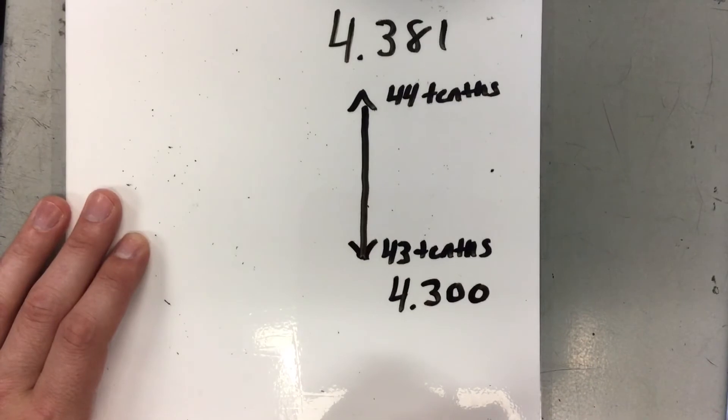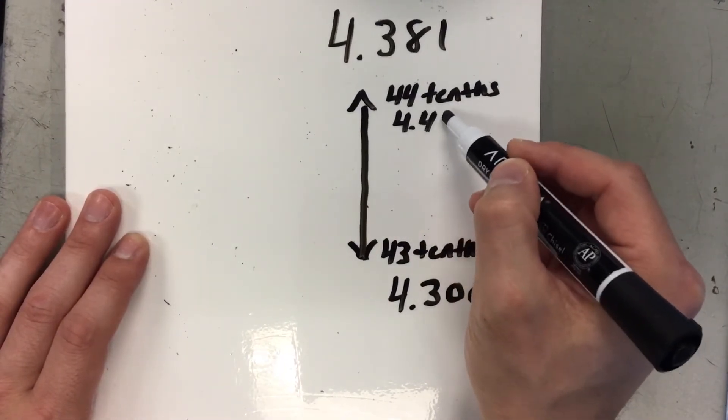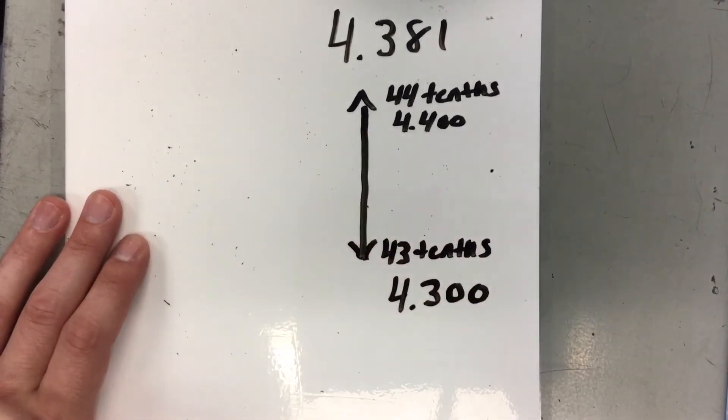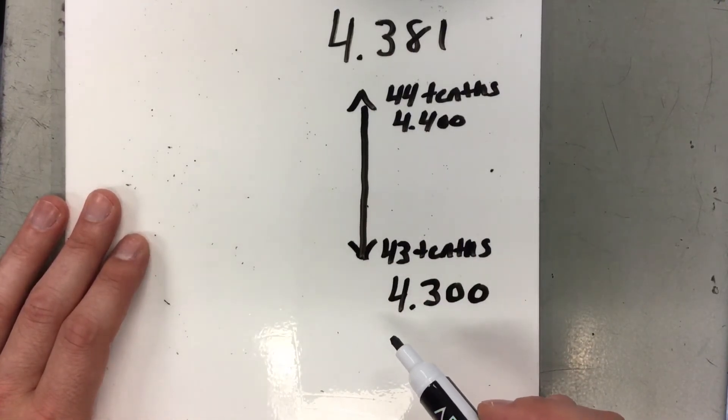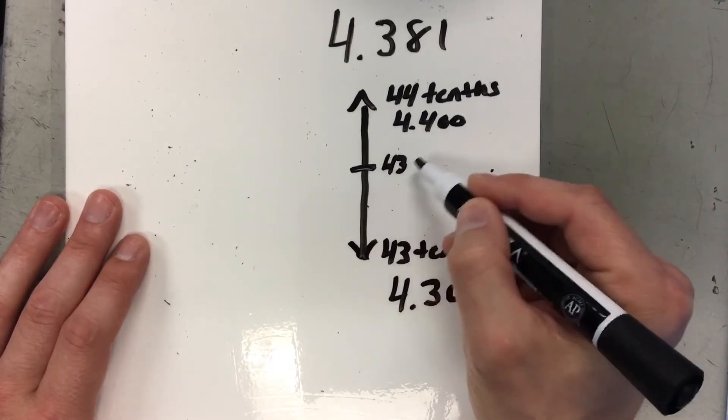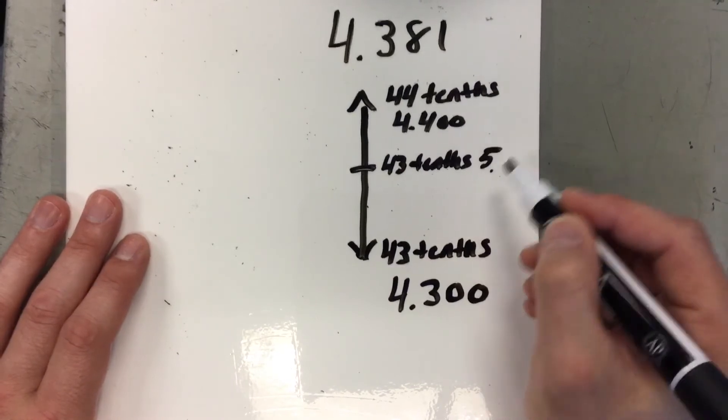Now, I know that 44 tenths would be 4 ones, 4 tenths. Now, I'm going to add two zeros because my number has thousandths. Now, what's in the middle of 43 tenths and 44 tenths? That would be 43 tenths and 5 hundredths.